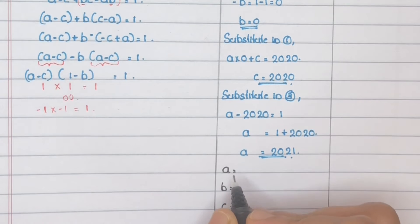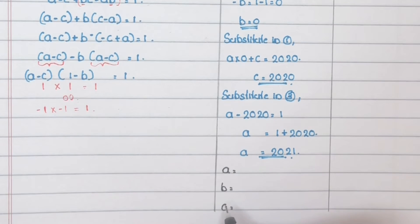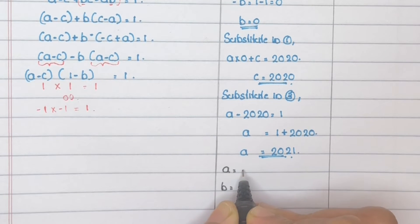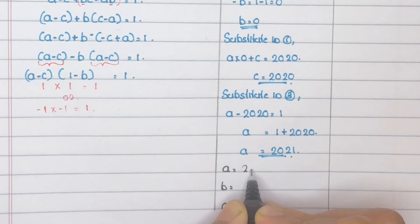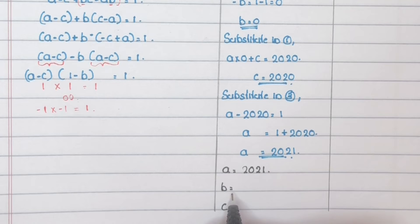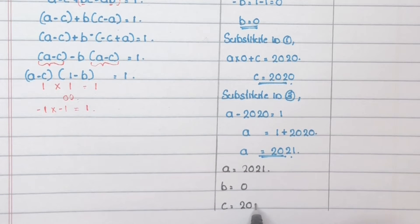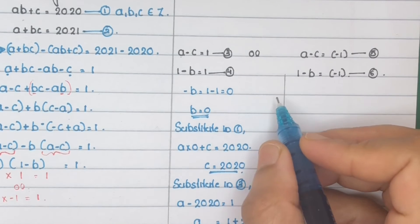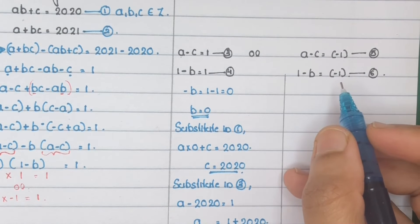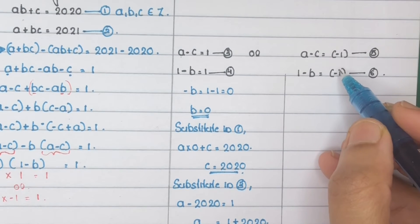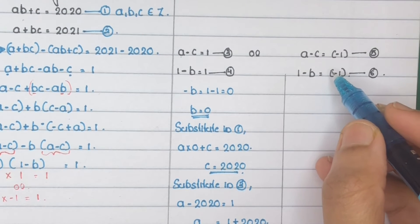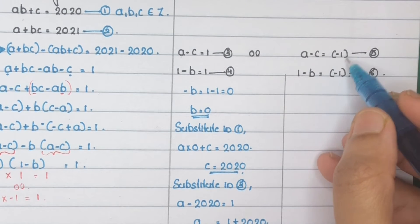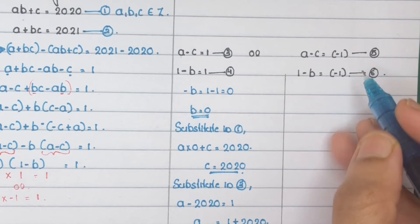From A minus 2020 equals 1, we get A equals 1 plus 2020, so A equals 2021. The values for the first condition are: A equals 2021, B equals 0, C equals 2020. Now consider the second condition and solve those two equations for A, B, and C.